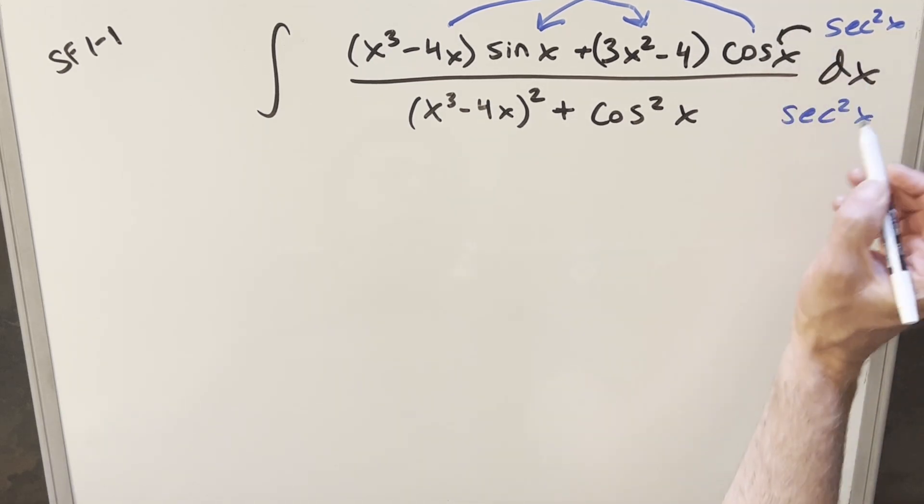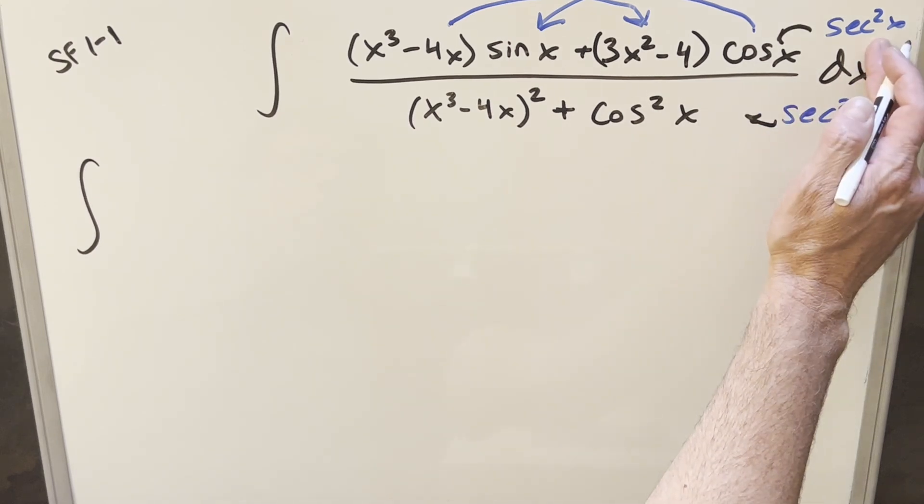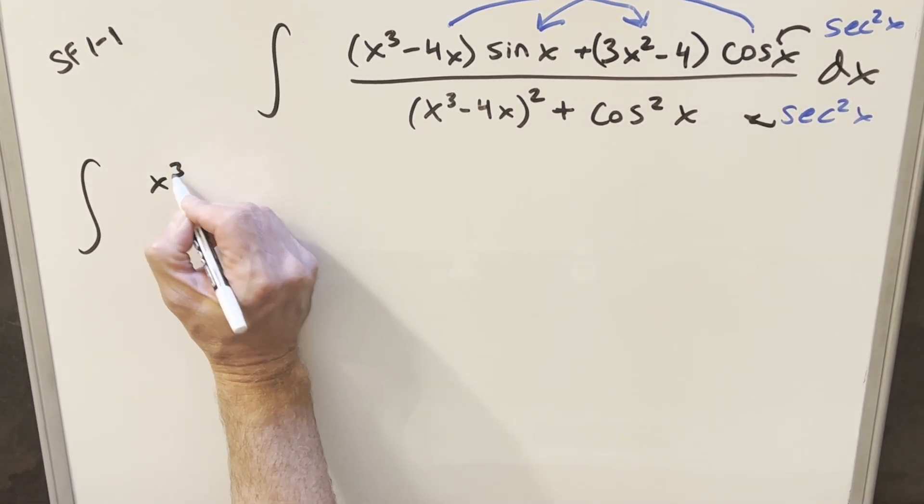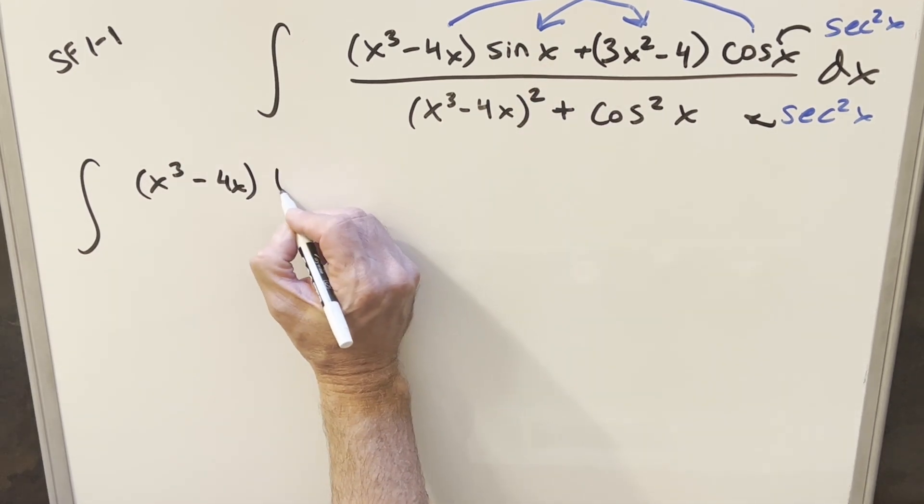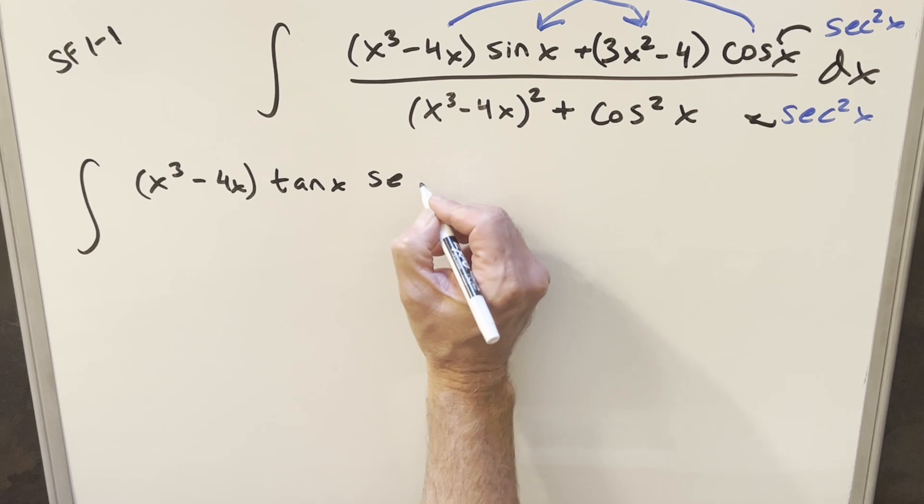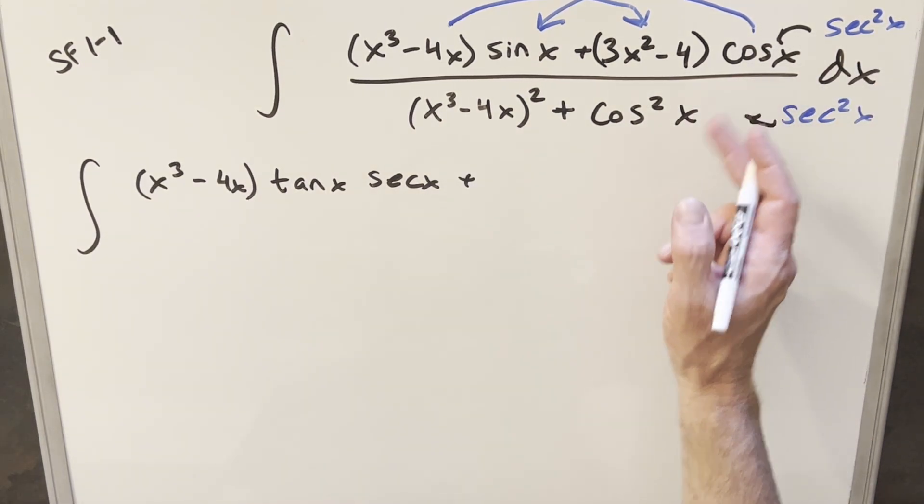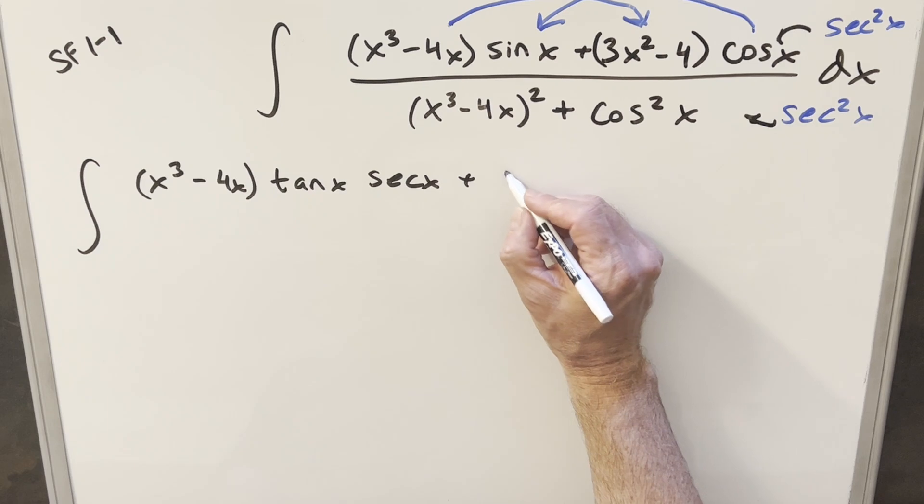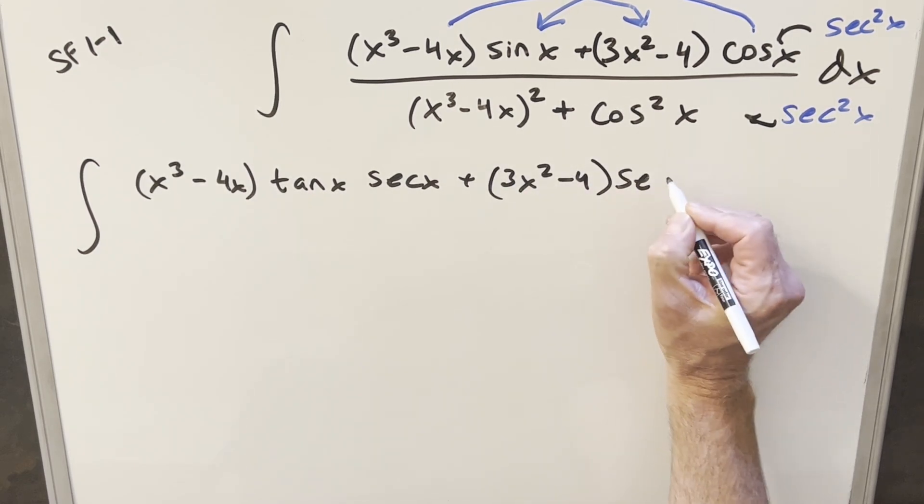So if I distribute this in and rewrite everything, first in the numerator when we rewrite this, if I take one copy of secant and multiply it times sine, that's just going to be tan of x and then we'll have the other copy of secant x. And then next, when you multiply secant squared times cosine, one of the cosines is going to cancel and then we're just going to be left here with secant x.